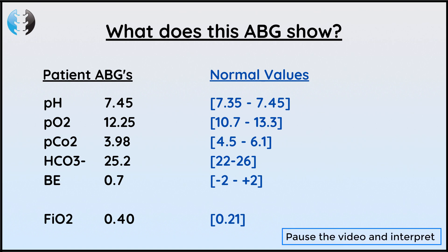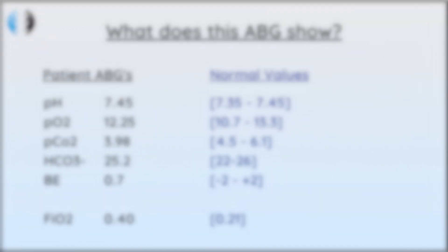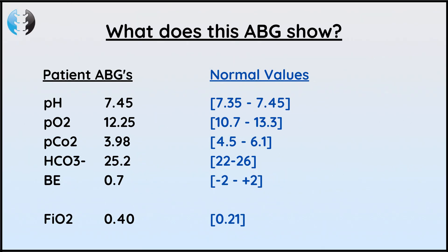Why don't you take 10 seconds to analyse this set of ABGs and see what you think? On first glance you may think that this patient has relatively normal PO2 levels, but actually, whilst the actual PO2 number is within normal range, this patient is really hypoxemic and has really low oxygen levels. So why is that the case? It's all because of the FiO2 — the amount of oxygen being delivered to them.